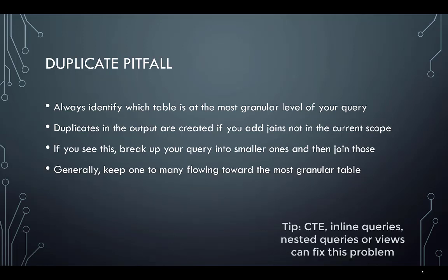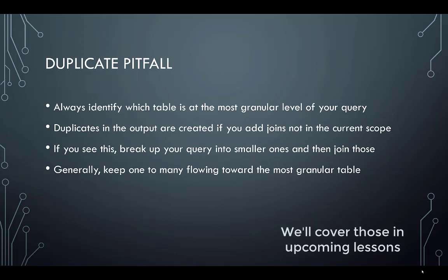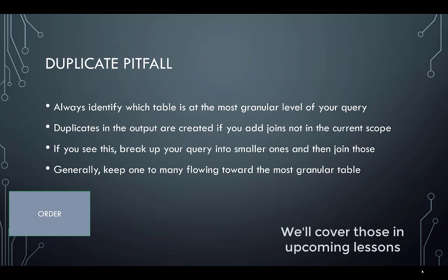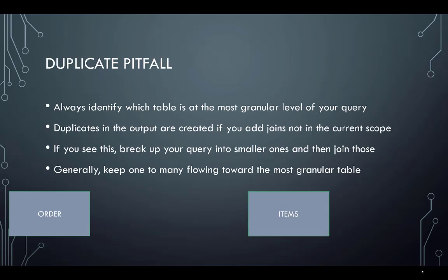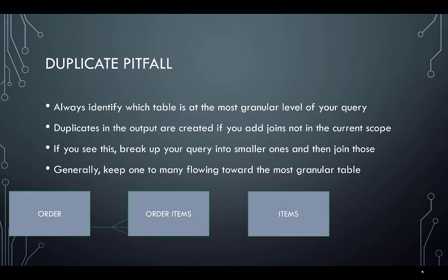Generally speaking, to keep things simple, keep the one-to-many flowing towards the most granular table. In our orders example, we might have orders and items, and we join those one-to-many each way. That will create a distinct list of our order items with the order information and the item information on it.